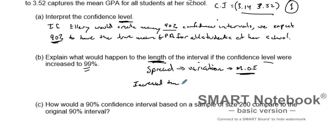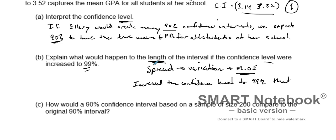If we increase the confidence level to 99%, what does that do to the margin of error? Because we're going to hopefully capture the true mean in that interval with more accuracy, in order to capture the true mean we have to create a wider net — a wider range of values potentially.